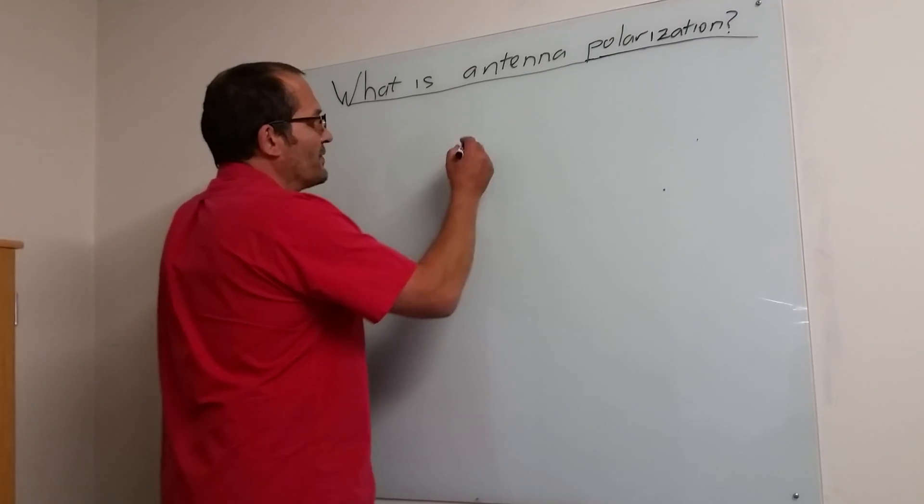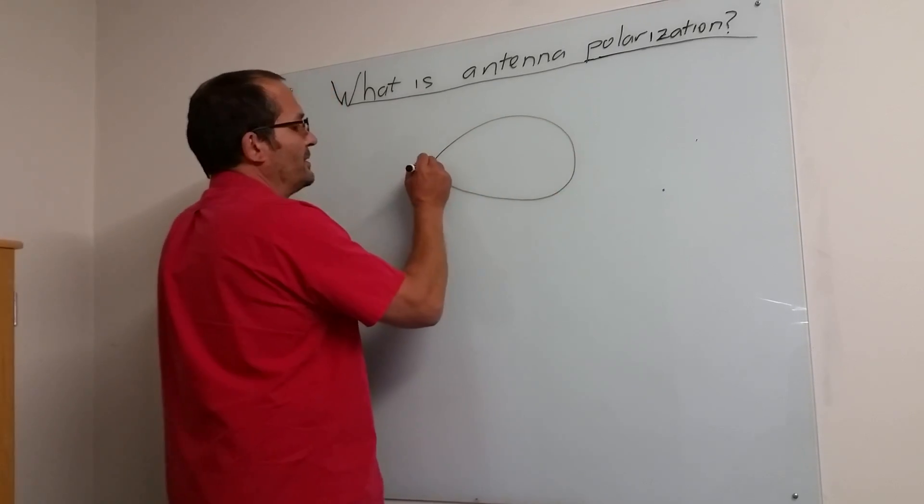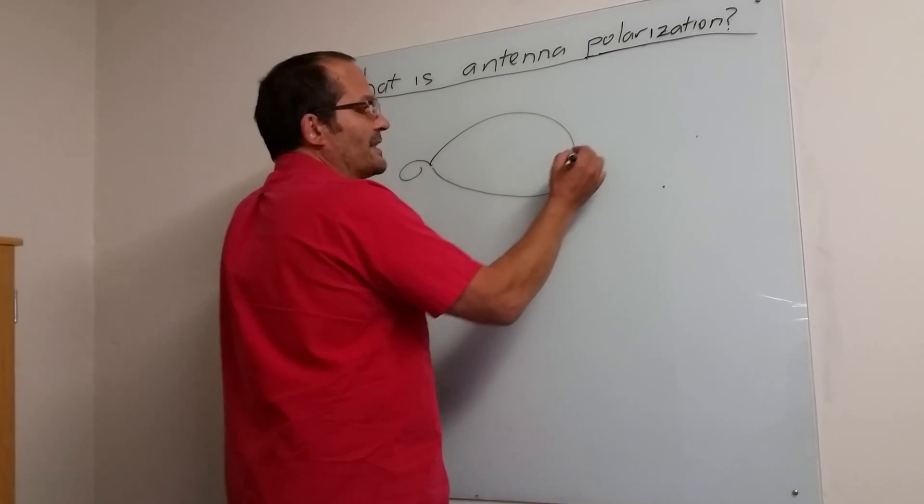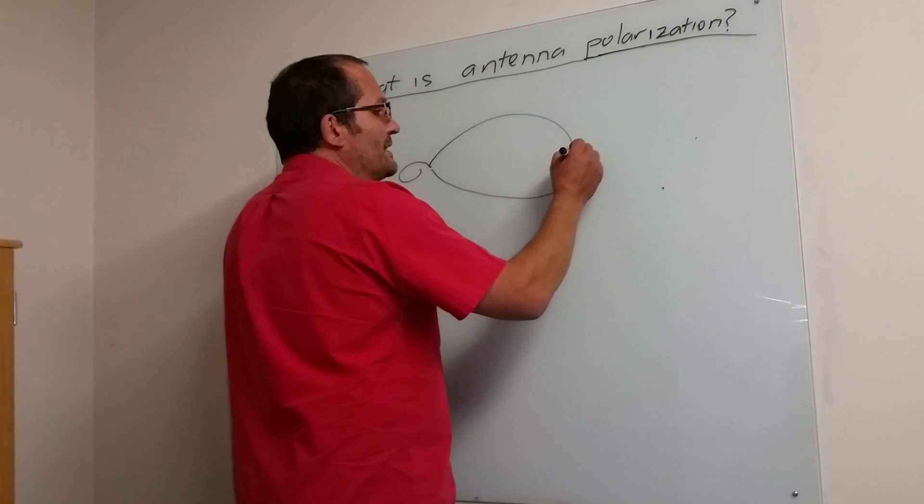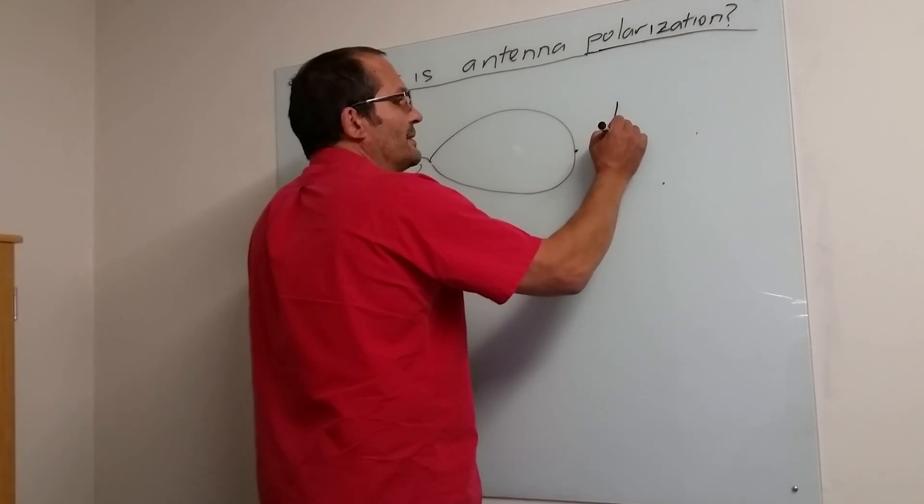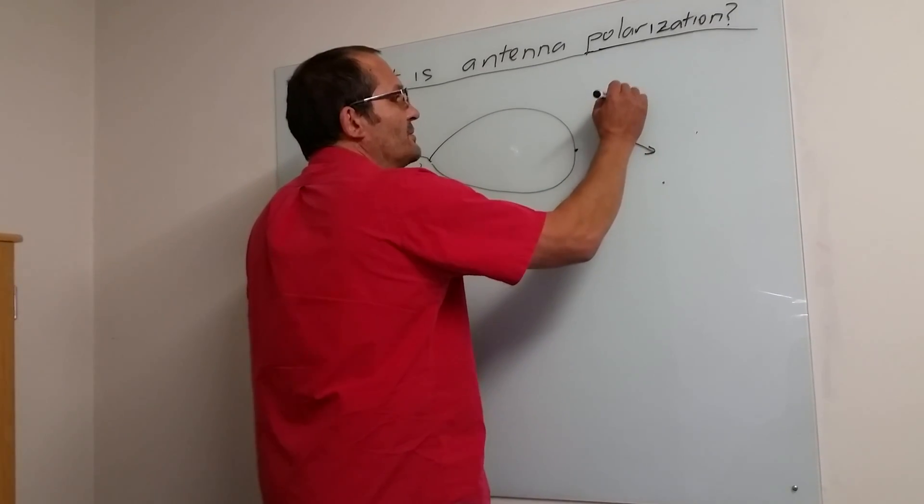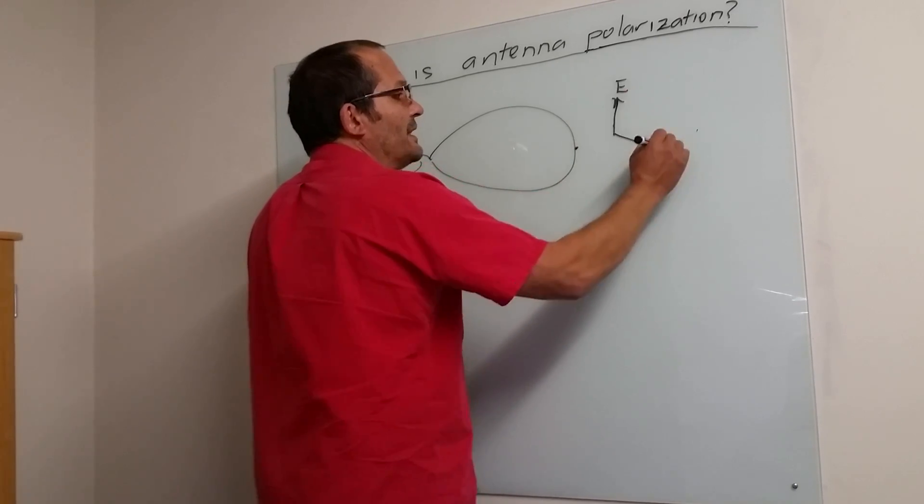What happens is if you've got a certain antenna pattern, start off with a pattern, out here there's some energy. And energy is always transmitted by an electromagnetic wave, which means it's got an E field and an H field.